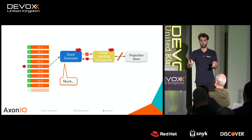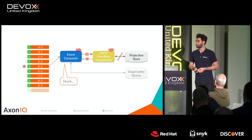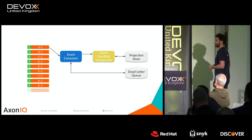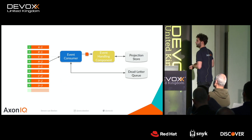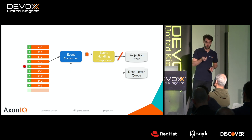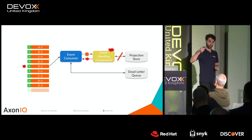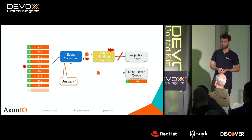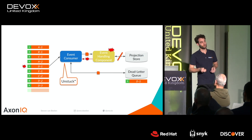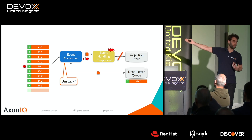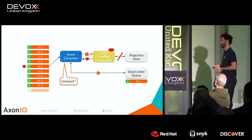This is where the dead letter queue comes in. We add the dead letter queue so that when the exception occurs at event five, instead of stopping, the consumer moves that event to the dead letter queue. We're now unstuck — though you still need to deal with the underlying technical issue, you can proceed processing.